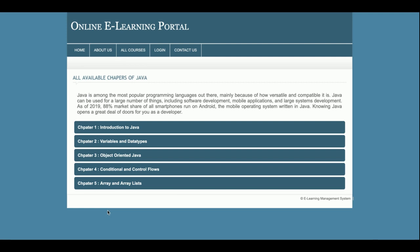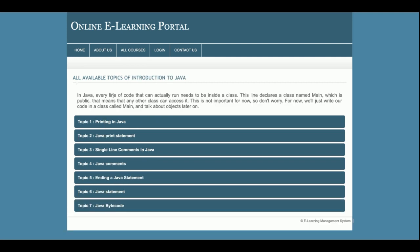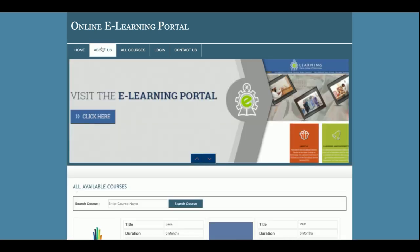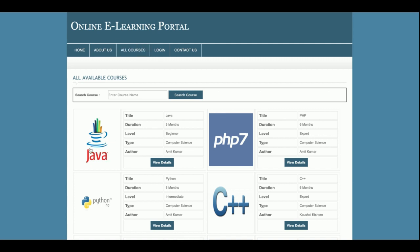There are five chapters available in this course and you can add any number of chapters from the admin panel. Once you click on Chapter One (Introduction), you will see all the topics available in that chapter. There are seven topics available inside the chapter. Once you click on a topic, you will be able to learn the content.